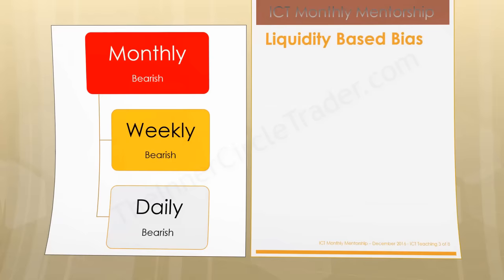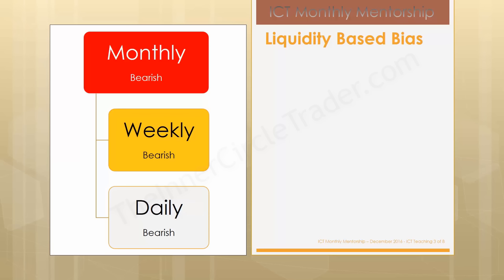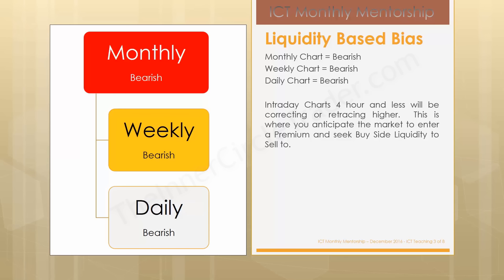Liquidity based bias: if the monthly chart is bearish, the weekly chart is bearish, and the daily chart is bearish, that will give us a wonderful opportunity to get in sync with institutional order flow. Intraday charts four hours and less will be correcting and retracing higher. The markets are predisposed to go lower because the monthly, weekly, and daily show price wanting to go lower — it's been making lower lows and lower highs. Support levels are giving way and resistance levels are being formed and respected.